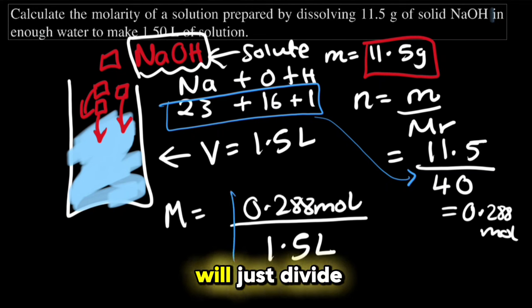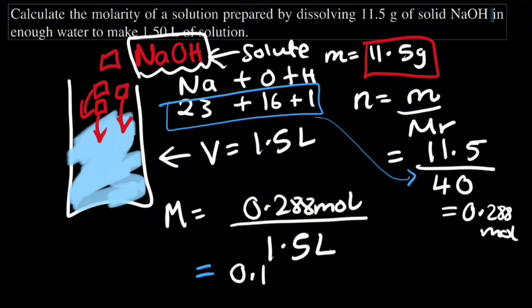Now finally we will just divide this and you will get our molarity as 0.192 mol per liter, or you can also write the unit as capital M.